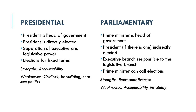Presidential systems are governments where the president is the head of government as well as the head of state — in other words, where the president is the person in charge of running the country. In these systems, the president is typically elected directly by the general public. There is also a separation of executive power, located in the president and the bureaucracy, from legislative power, located in the parliament. Presidents typically serve a fixed term in office, normally four to five years, and are chosen by elections held at regular intervals.